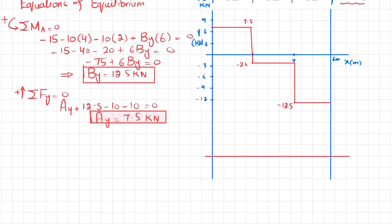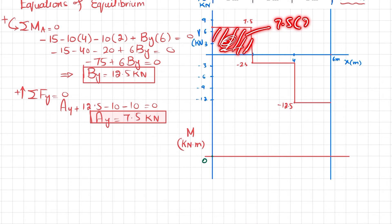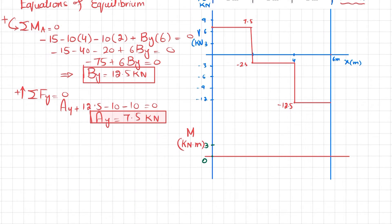Now we draw the bending moment diagram. Plot a horizontal line; the moment will be in kilonewton·meters. At x equals zero, the moment is zero. The first area under the shear force diagram is rectangular: 7.5 into width of 2 meters equals 15 kN·m. Since the shear force is a positive horizontal line (zero-degree slope), the bending moment is one degree higher — a straight line with positive upward slope. So at x equals 2 m, the moment is 15 kN·m.